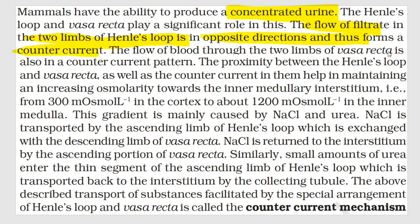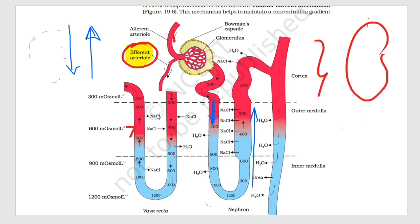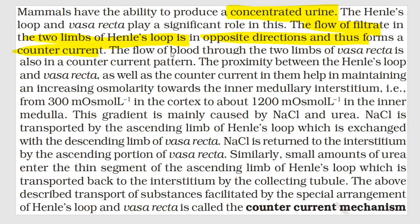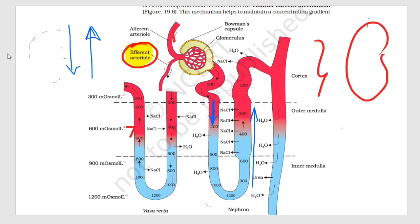The flow of blood through the two limbs of vasa recta is also in a counter current pattern. Vasa recta carries blood, while the loop of Henle carries filtrate. The proximity between Henle's loop and vasa recta, as well as the counter current in them, helps in maintaining increasing osmolarity towards the inner medullary interstitium. Interstitium means the empty spaces — in the medulla region of the kidney, the concentration slowly increases in those spaces. This concentration increase is caused by counter current.